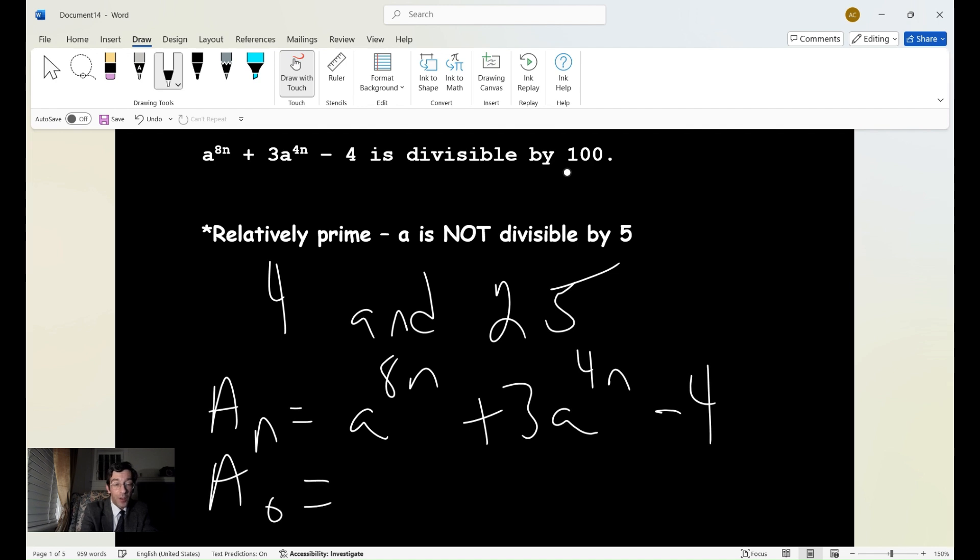8^(4n) would be 1, 1 times 3 is 3, 1 + 3 - 4, and that would give us 0, 4 - 4. So it's really a trivial matter here.